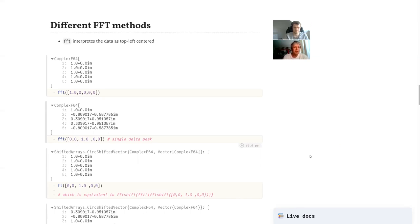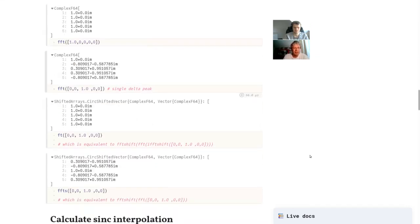If you, however, use instead the FT routine, so one F less, just Fourier transform in that sense, then it is already centered also in real space. And that means this FT routine uses the right-hand center of your array in real as well as in Fourier space. And there's also a routine called FFTs that does this only for Fourier space, but not for the real space.